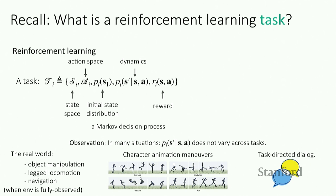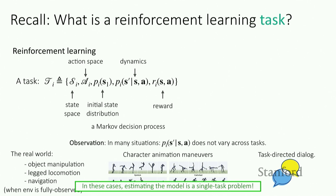Likewise, if you have an agent that wants to accomplish a task through dialogue — such as helping you order dinner or reserve a car — the underlying dynamics of interacting with that person may be the same, but the reward function of what you want to accomplish varies. In all these cases where dynamics are consistent across tasks, estimating the model is a single-task problem. This learning problem may actually be easier than multi-task model-free methods because we only have to solve a single task learning problem, and then use that to find a policy optimizing different tasks.